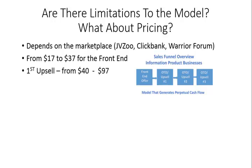For that first upsell, you want to keep it right around $97. You can go as low as $40 if you're on the lower end for your front-end offer, but typically that first upsell should be right around the $97 level. You want to give your buyer additional resources to maximize what they can do with your product, expanding their resources so they have everything available to them.